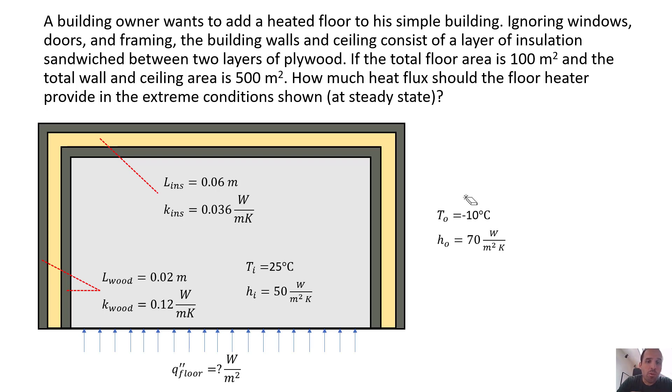We're given the thermal properties, so here we have the insulation layer in yellow and then we've got this wood layer on either side of the insulation. We have this heated floor here on the bottom.